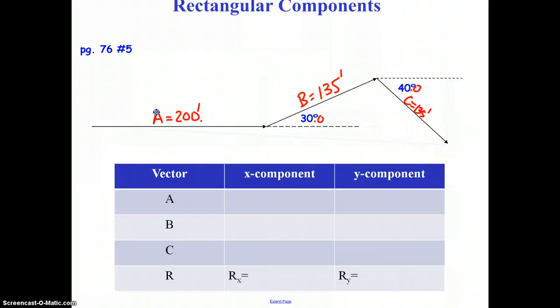If we look at vector A, A lies in the x-plane, so it has all of its value as an x-component. The 200 feet is all in the x-direction. Vector A has no y-component. However, because vector B is at an angle, it has both an x-component and a y-component. Likewise, vector C has an x-component and a y-component.